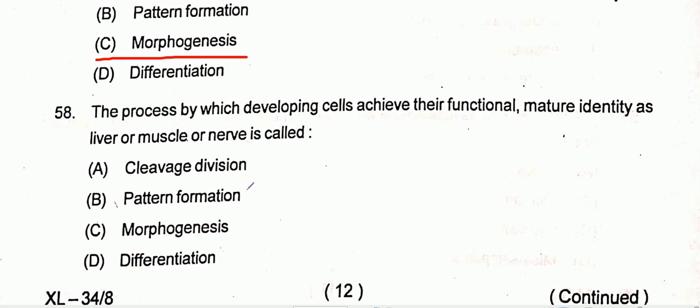Question number 58: The process by which developing cells achieve their functional mature identity as liver, muscle, or nerve cells is called — option D is the correct one, that is differentiation.